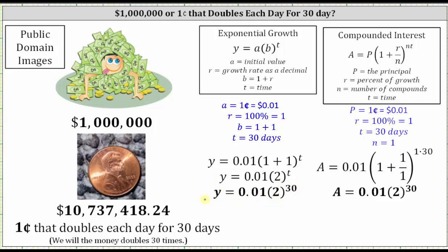Another common equation would be the compound interest formula, A equals P times the quantity one plus r divided by n, raised to the power of nt, where A is the amount after time t, P is the principal or starting amount, r is the percent of growth or growth rate per unit of time t, n is the number of compounds per unit of time, and t is time.